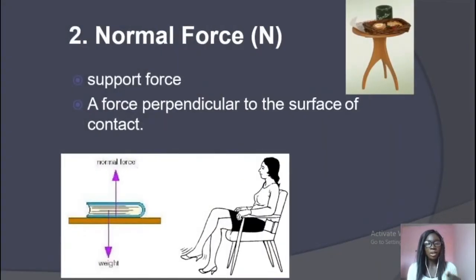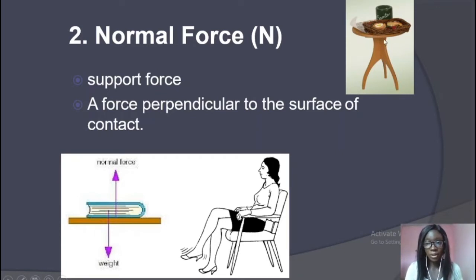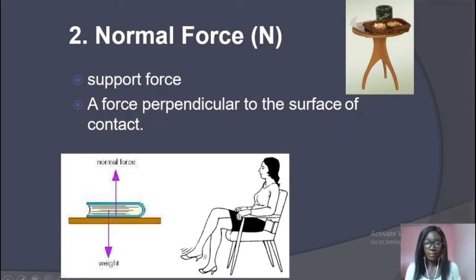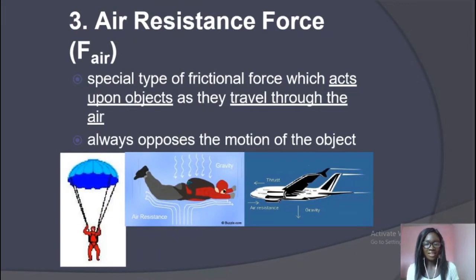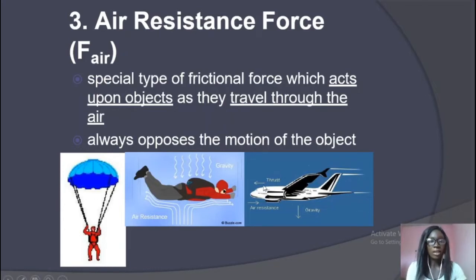We also have normal force. Normal force is the upward force — it's the force that supports an object. For example, we have a table with snacks on it. The normal force acts perpendicular to the surface. It is a support force acting in the upward direction. We also have air resistance, which is a specific type of frictional force that acts upon an object as it travels through air. It opposes the motion of the object.